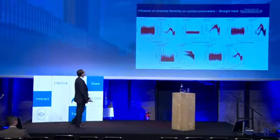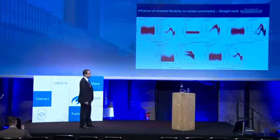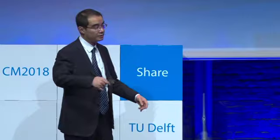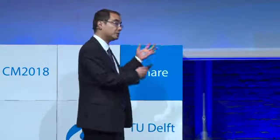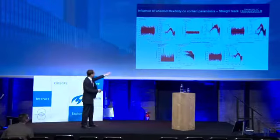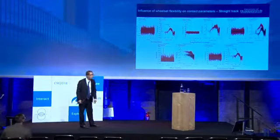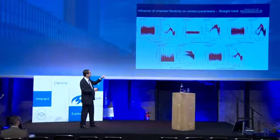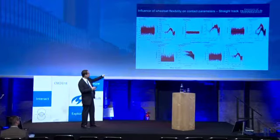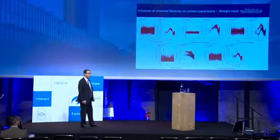Here is the influence of wheelset flexibility on contact parameters. The red curve is the flexible wheelset and the black curve is the rigid wheelset. For normal force on a straight track, the lateral creepage is very small. Normal force and longitudinal creepage show similar curves between the two, but lateral creepage is largely increased due to flexibility. Strangely, the increase in lateral creepage can be reflected in wheel wear number but not in the RCF wheel depth.